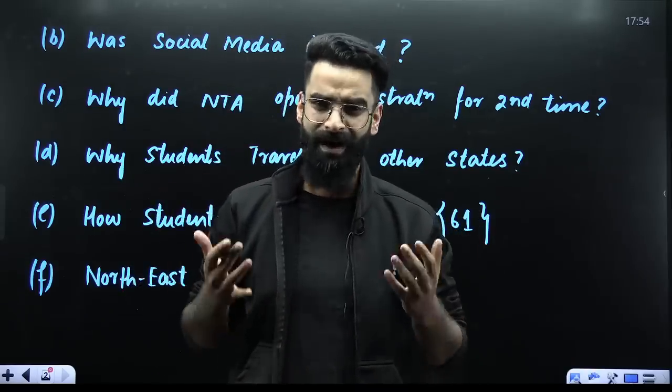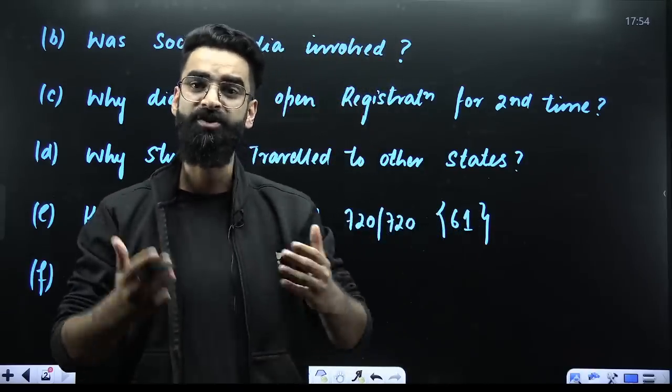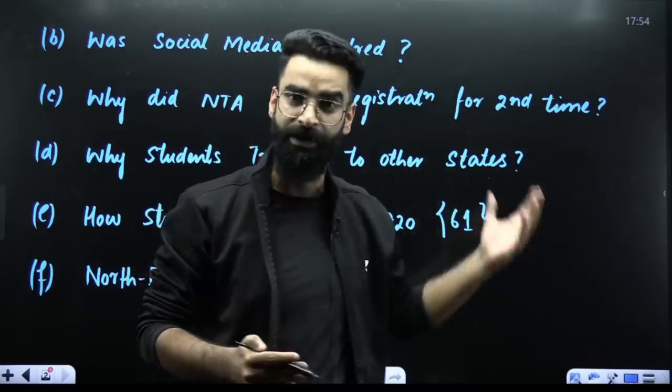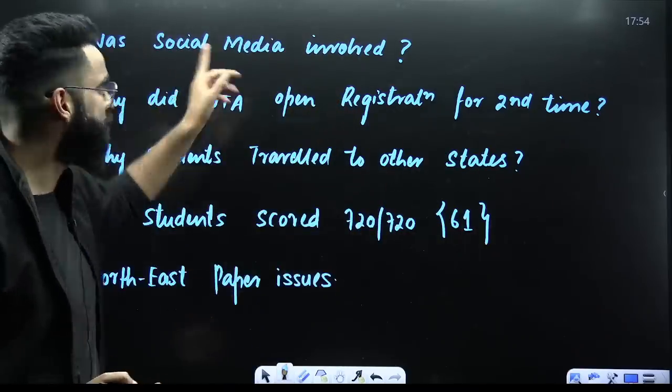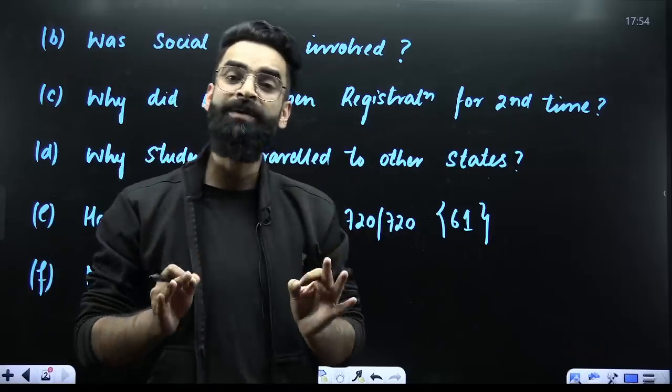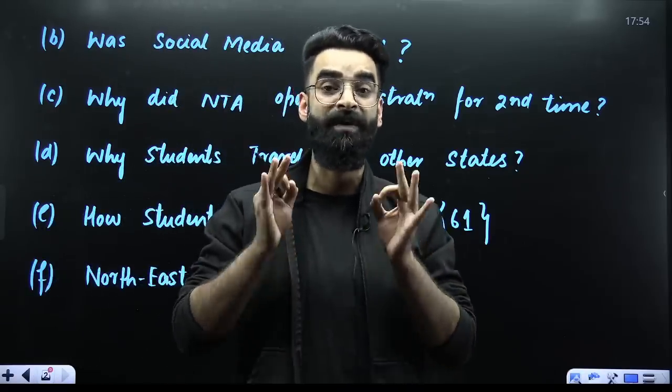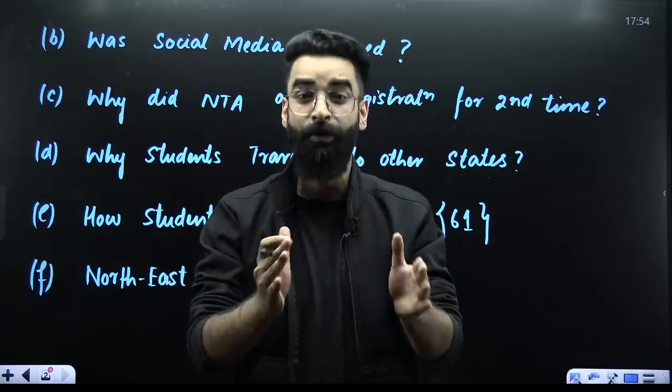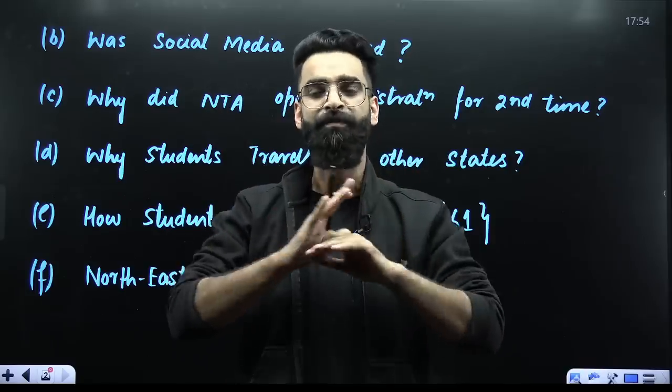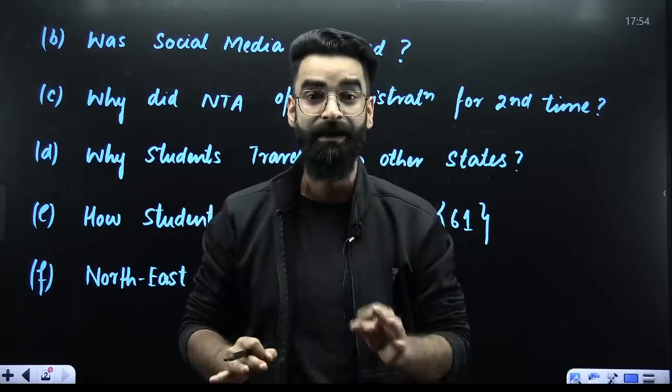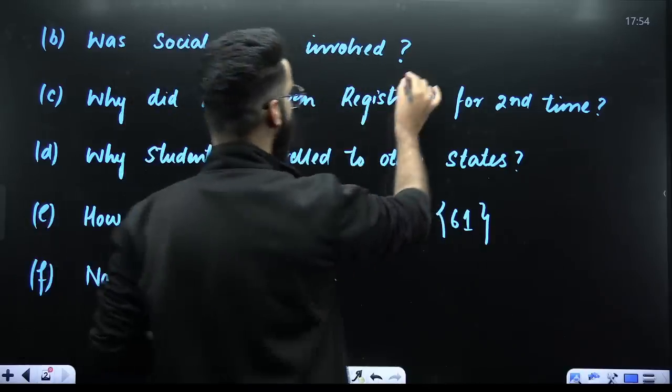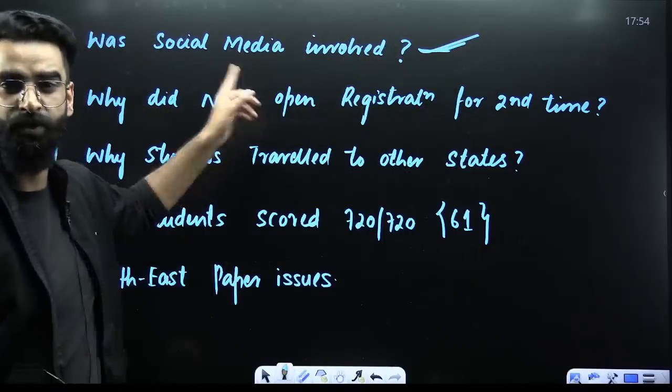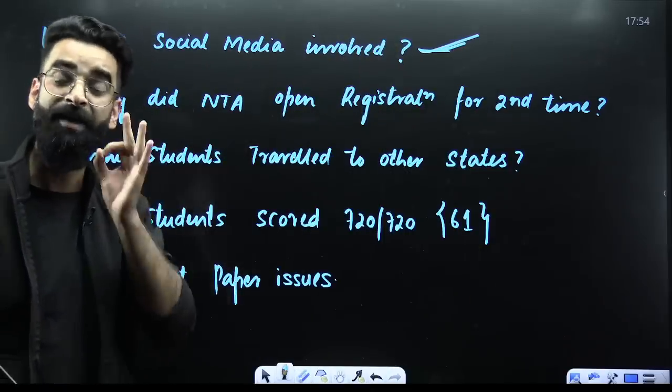Because if there is a discrepancy happening, we should know about it. And Supreme Court was fully prepared yesterday with all the questions. Was social media involved? This was the second question which was asked by the judges. If WhatsApp, Telegram, Instagram, if it was involved in the paper leak, then definitely the paper leak has happened on a large scale. So what Supreme Court wants, they want the verification of this particular point as well, which is going to come to us on 11th.